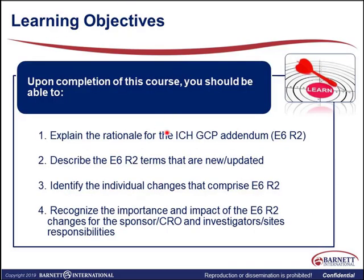After this training, we would like for you to be able to explain the rationale of ICH GCP and the addendum — what actually drove the addendum changes. Describe the changes that were new and updated, so what's different from the original version of GCP versus the new version. Identify the individual changes that comprise the addendum, which we'll call E6 R2. And then recognize the importance and impact of the changes for the sponsor and CROs and also for the site responsibilities.